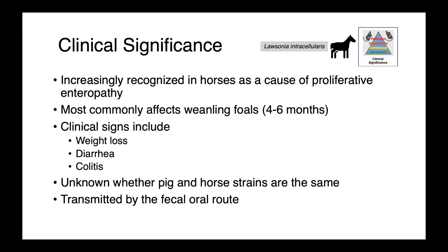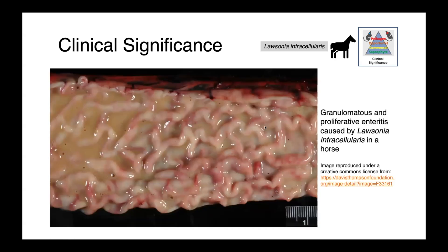Lausonia intracellularis is increasingly recognized in horses as a cause of proliferative enteropathy. It most commonly occurs in weanling foals between about four to six months old, with clinical signs including weight loss, diarrhea, and colitis. We don't yet know whether the pig and horse strains are the same or if there are species-specific strain preferences. Like in pigs, transmission is thought to be via the fecal-oral route. In this image, you can see granulomatous and proliferative enteritis in a horse, with markedly thickened tissues, hyperemia, and excess mucus production visible within the lumen.